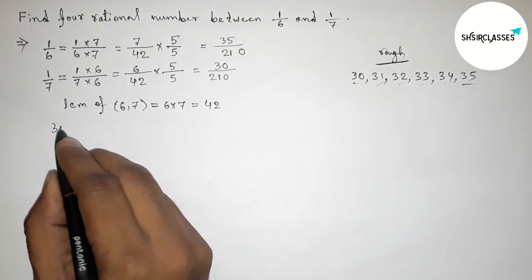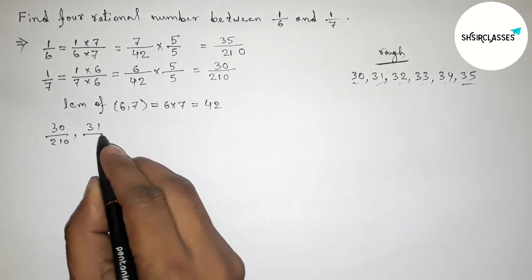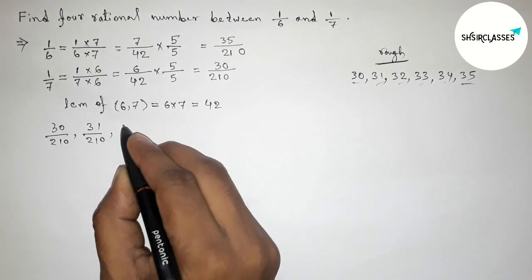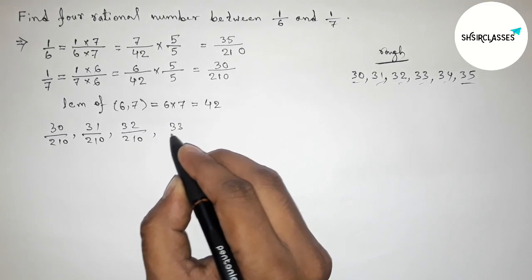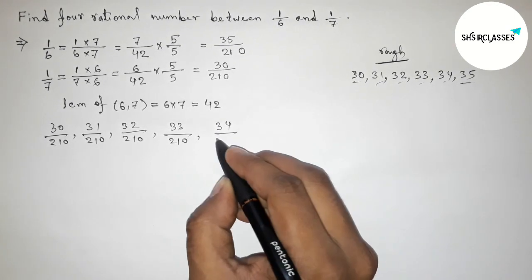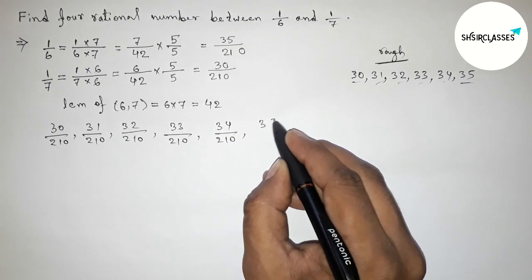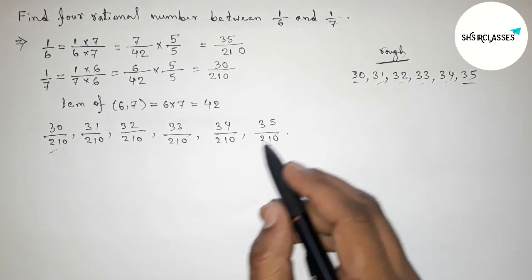So first write down here all the rational numbers. First one is 30 by 210, then 31 by 210, 32 by 210, then 33 by 210, 34 by 210, and last one is 35 by 210.